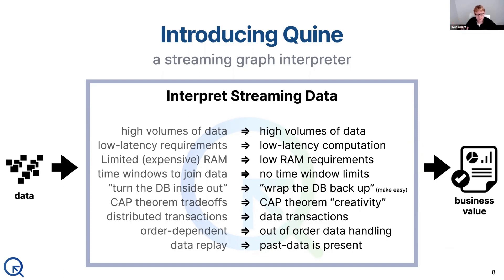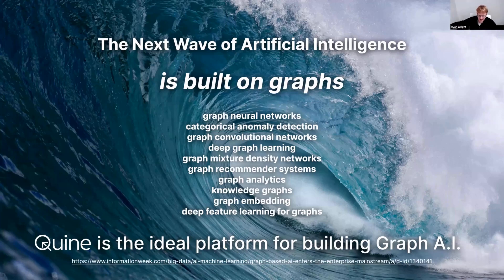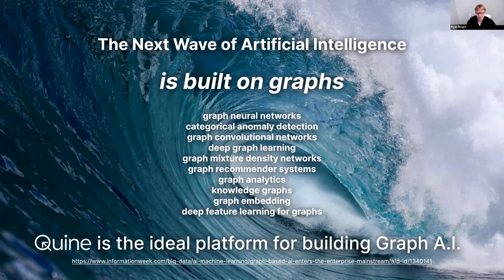Quine has some really big ambitions because we've been at this for a long time, and we've open sourced this code. It's freely available to you, and we think it is just a game changer for the streaming data pipeline, as well as a foundation for the next wave of AI. There's a whole host of graph-based artificial intelligence techniques that are just leaving the research lab now, starting to get implemented in modern data pipelines, because they've got really revolutionary capabilities for what you can do with AI, especially in a streaming data system.